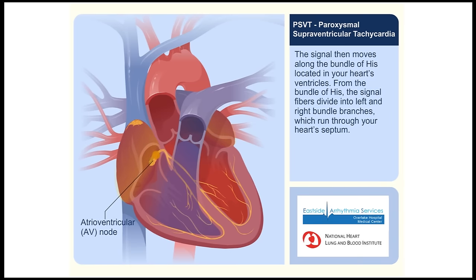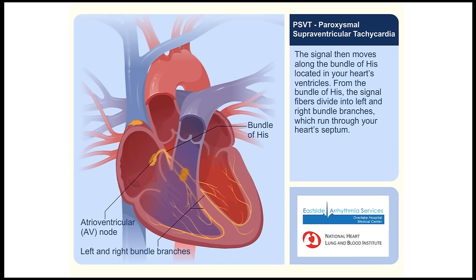The signal then moves along the bundle of His, located in your heart's ventricles. From the bundle of His, the signal fibers divide into left and right bundle branches, which run through your heart's septum.